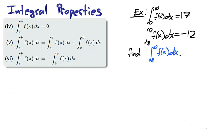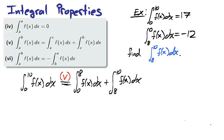Let's take an example. If we know that the integral from 0 to 10 of f is 17 and from 8 to 0 is negative 12, then we can calculate the integral from 8 to 10 of f. The integral from 0 to 10 of f(x) can be broken up using property 5. We let c be 8 and find that the integral from 0 to 10 is equal to the integral from 0 to 8 plus 8 to 10.